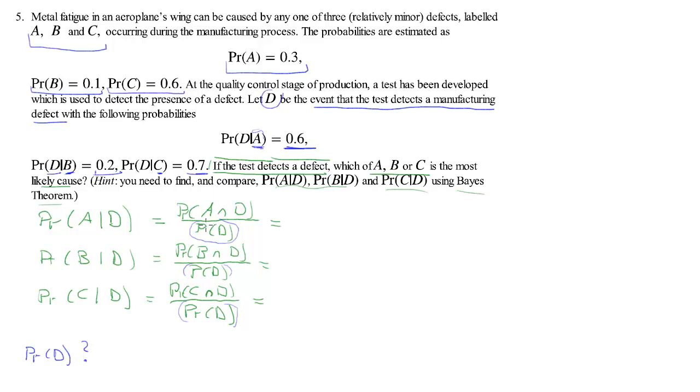However, this probability occurs in each of these probabilities and we are only asked to compare these three probabilities. So we will still be able to compare in the sense, for instance, the probability of A conditional on D is smaller, larger, or equal to the probability of B conditional on D. So that's what we are going to do.